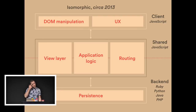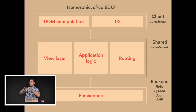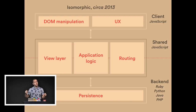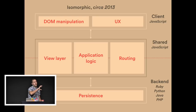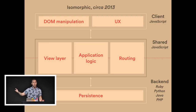What we started to see recently is the rise of an isomorphic approach. This means taking the main chunk of the application — the view layer, application logic, and routing — and finding a way to write it in JavaScript, but share it between client and server. This is a shared layer that can be executed in the web browser or on the server. And the way I see it, this is the future of web apps.